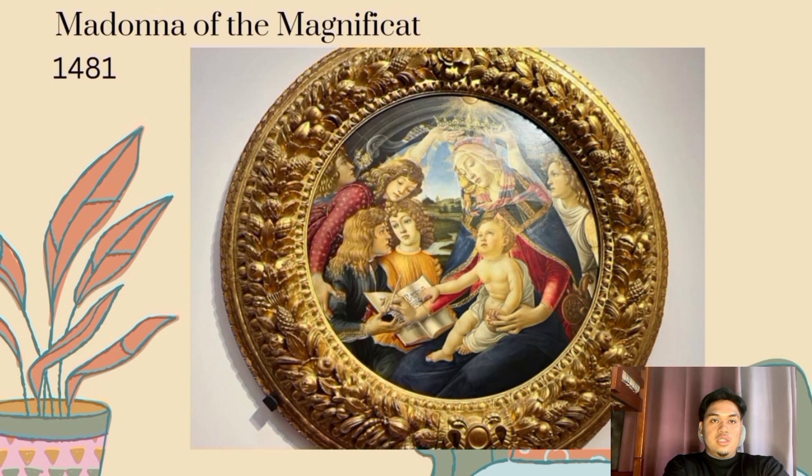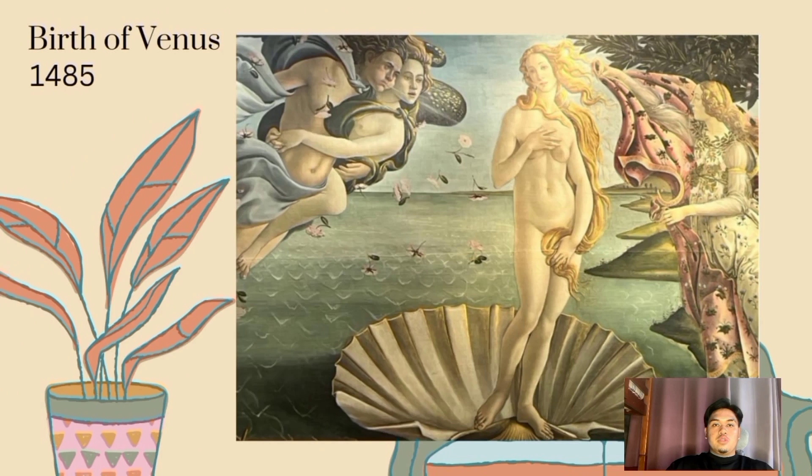Considered to be Botticelli's most majestic portrayal of the Virgin and Child, this Tondo takes its name from the Latin hymn known as the Magnificat. It is also known as the Virgin and Child with the Five Angels. The Virgin writes the Magnificat with her right hand, and a pomegranate — symbol of resurrection and life everlasting — is held nearby.